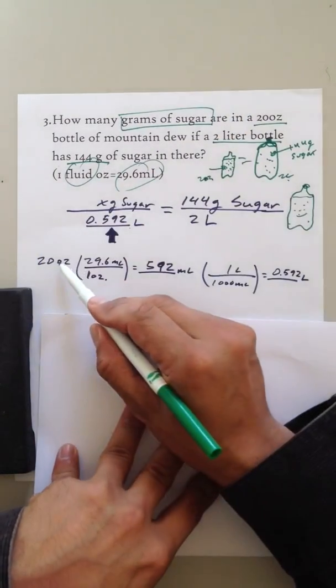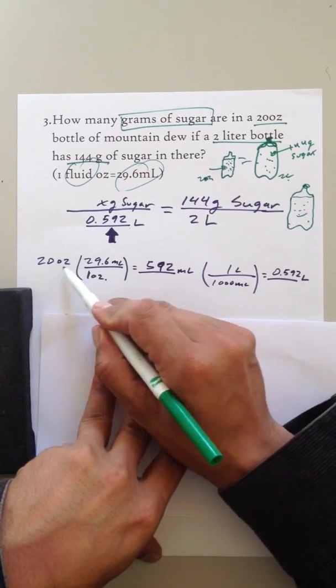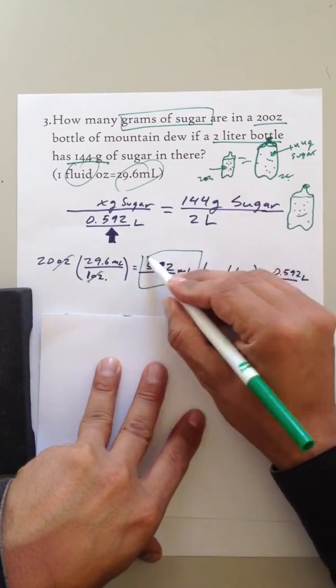Well, here's the math. 20 ounces—for every 1 ounce is 29.6 milliliters, so I used a conversion factor, just multiplying this by 20, and that's 592 milliliters.